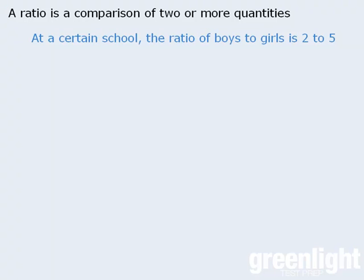So here, the two to five ratio means at the school there are two boys for every five girls. Also note that the order of the numbers is very important. For example, if we were to say that the ratio of boys to girls is five to two, then that would mean there are five boys for every two girls.